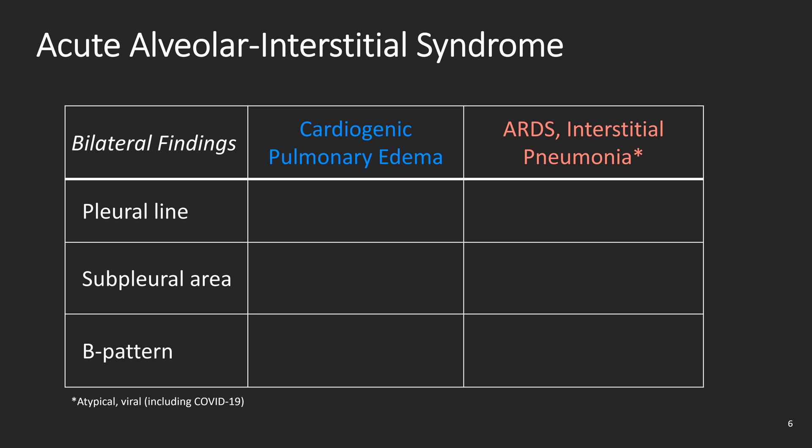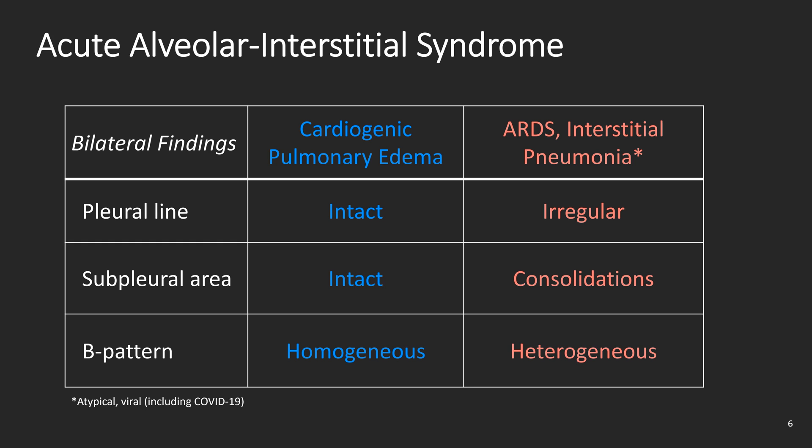Before moving on, let's clarify and reinforce what we are looking for in acute alveolar interstitial syndrome. We will evaluate the pleural line, the subpleural area, and the presence of B pattern. The pleural line will look intact in cardiogenic pulmonary edema, while it will look irregular in ARDS and interstitial pneumonia. The subpleural area will be intact in cardiogenic pulmonary edema; in ARDS and interstitial pneumonia there will be subpleural consolidations. The B pattern will be homogeneous in cardiogenic pulmonary edema but heterogeneous in ARDS and interstitial pneumonia. Remember that in ARDS and interstitial pneumonia there will be areas of normal lung with much less or even absent B pattern and a nice pleural line without subpleural consolidations.